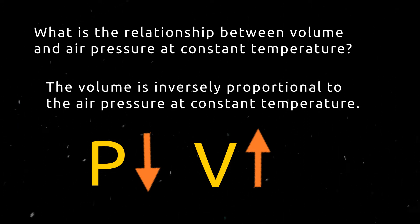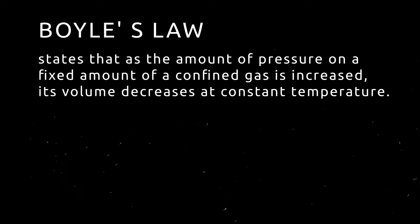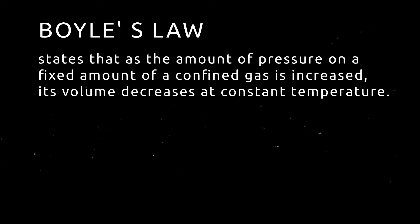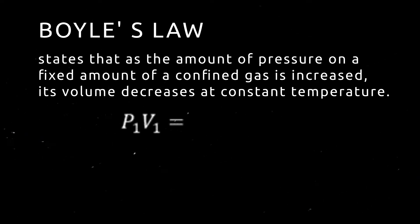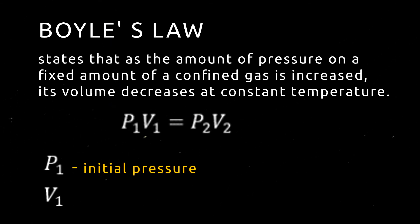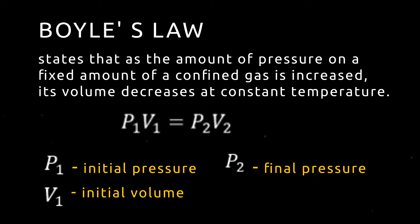This relationship of volume to pressure at constant temperature is called Boyle's Law. Boyle's Law states that as the amount of pressure on a fixed amount of gas is increased, its volume decreases at constant temperature. This relationship can be expressed in the equation P1 × V1 = P2 × V2, where P1 is the initial pressure, V1 is the initial volume, P2 is the final pressure, and V2 is the final volume.